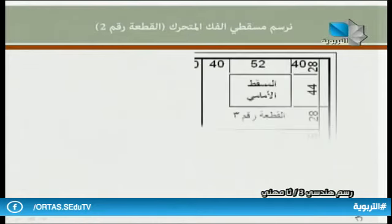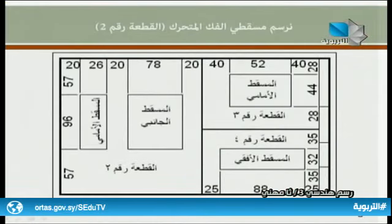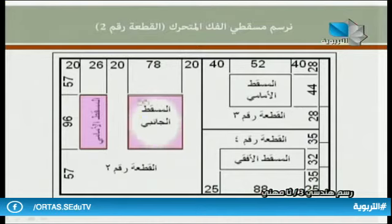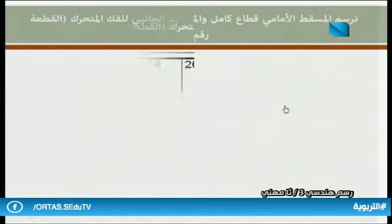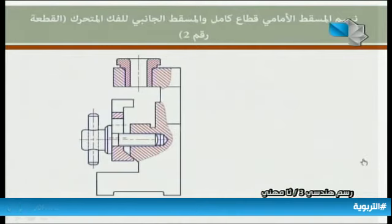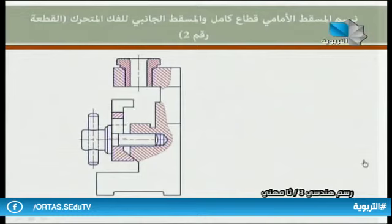نرسم مسقطي الفك المتحرك للقطعة رقم 2: يجب رسم المسقط الأمامي، وفي هذه المنطقة نرسم المسقط الجانبي بالنسبة للقطعة رقم 2. نرسم المسقط الأمامي قطاع كامل والمسقط الجانبي للفك المتحرك أي للقطعة رقم 2.